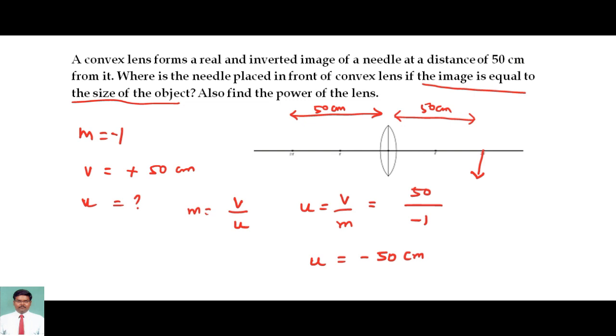This happens only if we keep an object at exactly 2F or the center of curvature. From the ray diagrams we know that if we keep an object exactly at 2F, the image also will be formed at exactly 2F of the same size. So if it is the same size, then the magnification will be equal to 1, and it is an inverted image. It is a real and inverted image, so I am having a minus sign. The minus represents it is an inverted image, and 1 represents that the object and the image are equal in size.